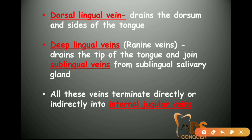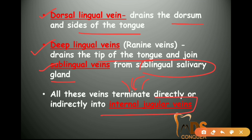For venous drainage, the dorsal lingual vein drains the dorsum and sides of the tongue, and the deep lingual veins drain the tip of the tongue and join the sublingual veins from the sublingual salivary gland. All these veins ultimately drain into the internal jugular vein.